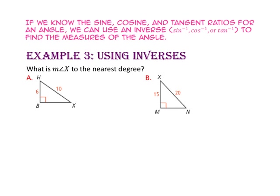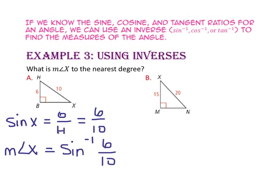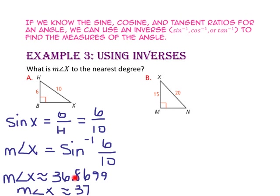If we know the sine, cosine, or tangent ratio for an angle, we can use the inverse to find the measure of the angle. In example 3, we will use the inverses. What is the measure of angle X to the nearest degree? Since we know the length of the side opposite angle X and the length of the hypotenuse, let's use the sine ratio. Since we're looking for the measure of the angle, we want to use the inverse. On your calculator, hit 6 divided by 10, hit the equal key, then the green second button, and the sine button. To the nearest degree, the measure of angle X is about 37 degrees.